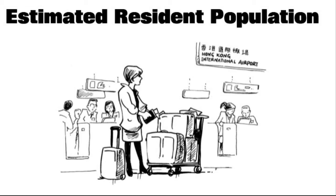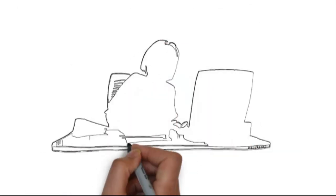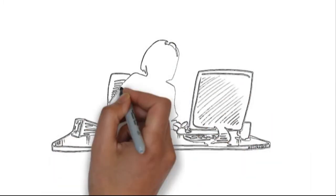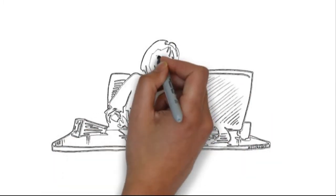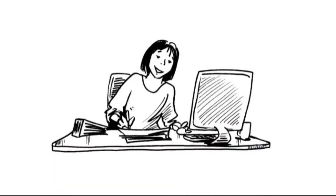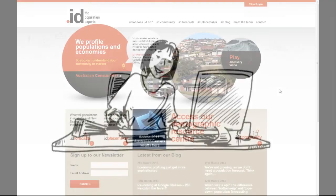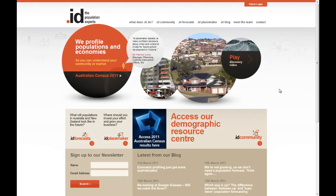ERP is the most accurate number, and it has the advantage that it is updated every year by the ABS, whereas the census count is only every five years. Since Veronica is writing a report that needs the most up-to-date total population figures for her council, she will use the ERP.